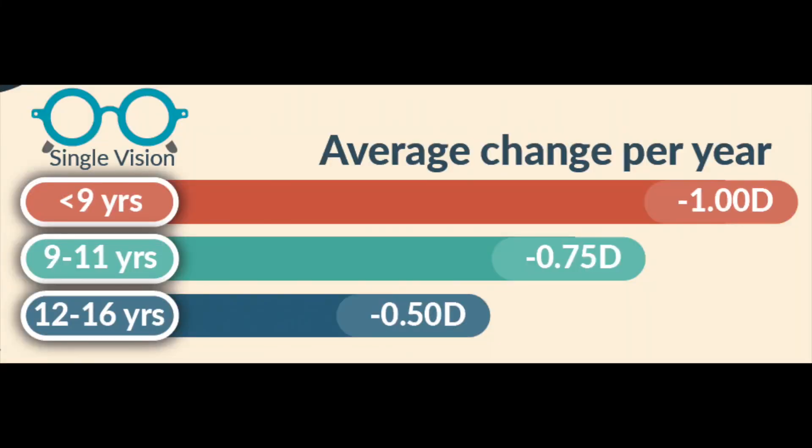For under the age of nine, it's not unusual to see a change of about a diopter each year. From about nine to eleven years old, you'll typically see about three quarters of a diopter change. And from the ages of 12 to 16, it's not unusual to see about a half diopter change each year.